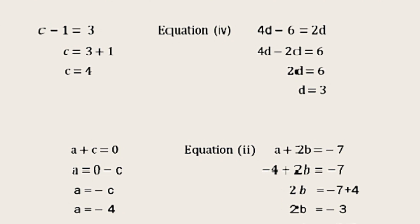And the last one, which is equation number 2, a plus 2b equals -7. Now put the value a equals -4 here. Now we shall have 2b equals -7 plus 4, which is -3, and b equals -3 by 2.